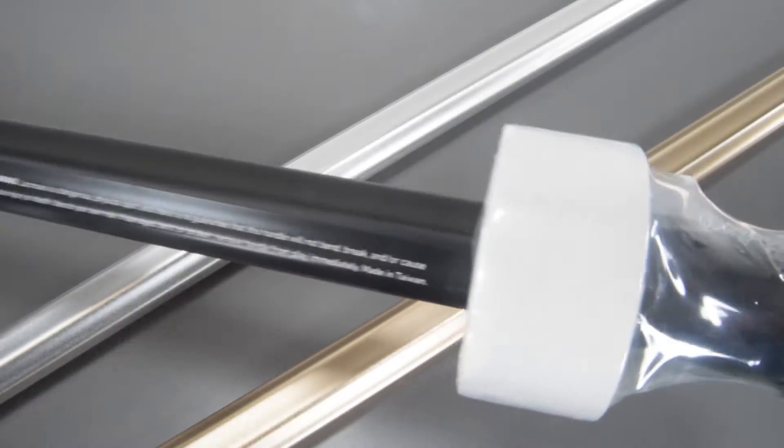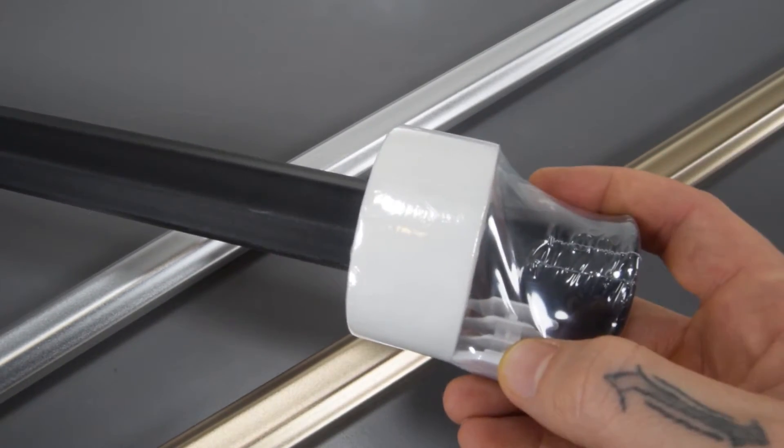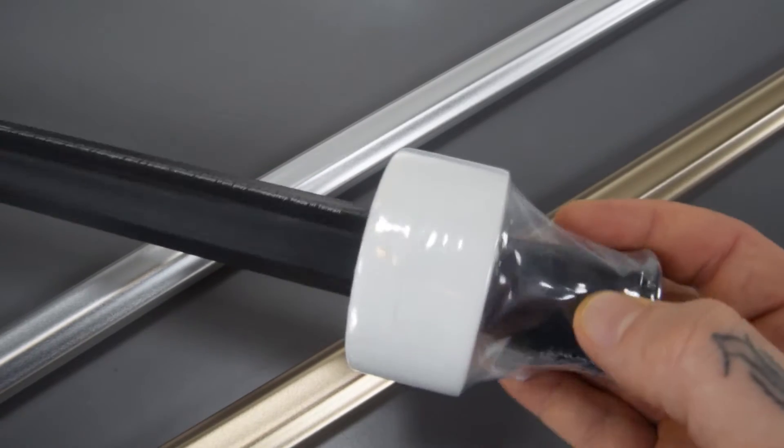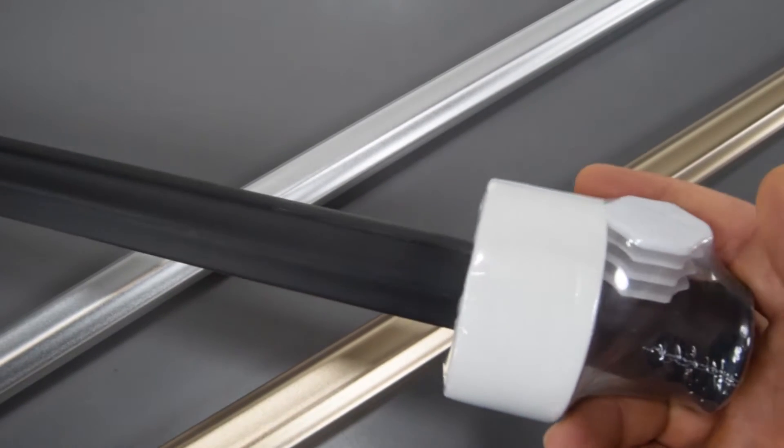And then on the far end again you get your end cap, you get your butt end, and you get that pre-cut roll of tape like all the other StringKing shafts that you've come to know, which is really convenient.